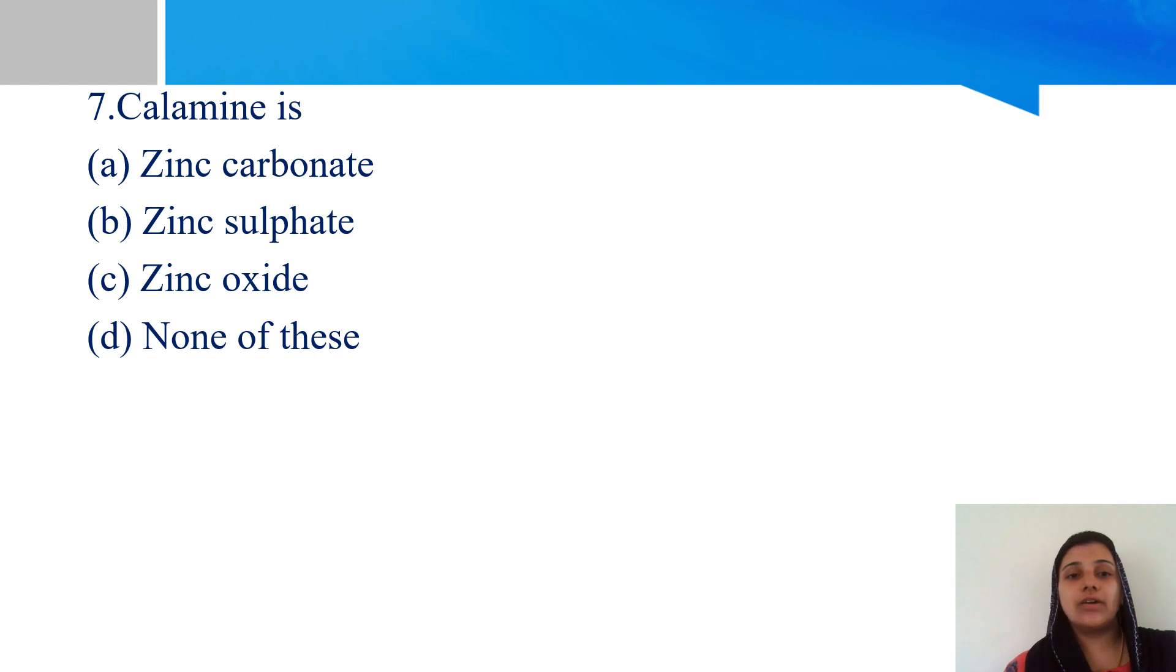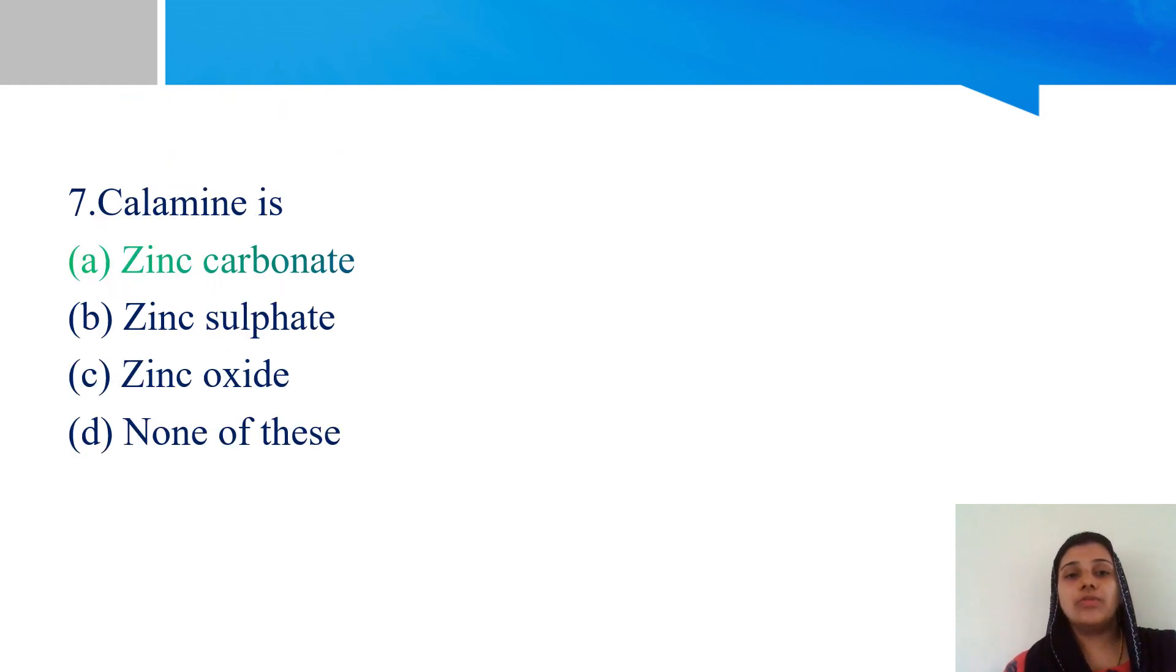Seventh question. Calamine consists of Zinc Carbonate, Zinc Sulfate, Zinc Oxide, or none of these. For Calamine Lotion composition, the right answer is Zinc Carbonate, option A.